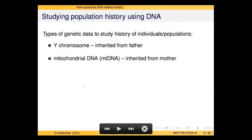For example, the Y chromosome — the interesting feature of that is the fact that it's passed along from father to son, so you can use it to trace paternal lineage. And then on the other end, you've got mitochondrial DNA, or mtDNA, which is passed along maternal lineage.